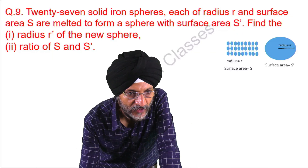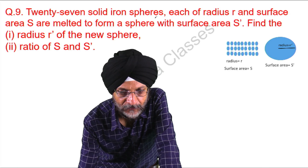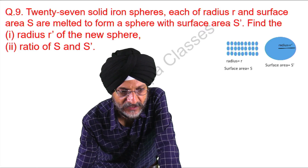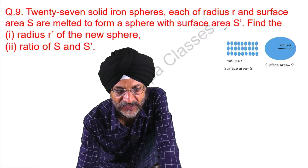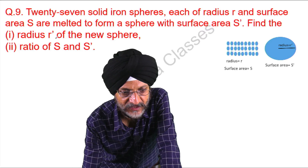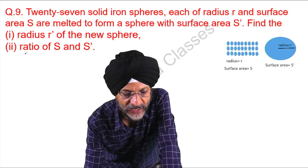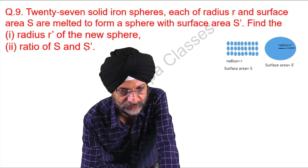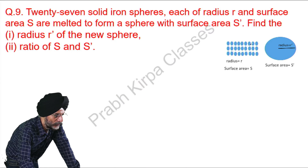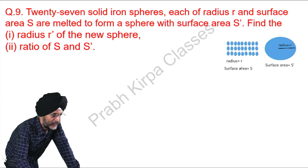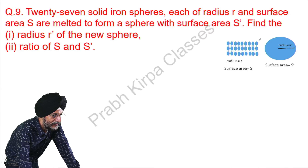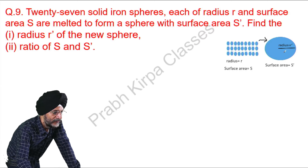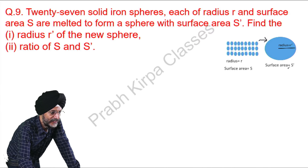The question before us is: 27 solid iron spheres, each of radius R and surface area S, are melted to form a sphere with surface area S dash. Find the radius R dash of the new sphere and the ratio of S and S dash. In this picture you can see the 27 solid spheres where radius is R and surface area is S, and they have been melted to form one big sphere with radius R dash and surface area S dash.